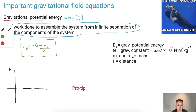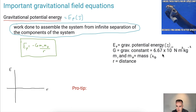Looking at the units: gravitational potential energy is in joules. G is the gravitational constant. M₁ and M₂ are the masses in kilograms. And R is the distance between the two objects, measured in meters.